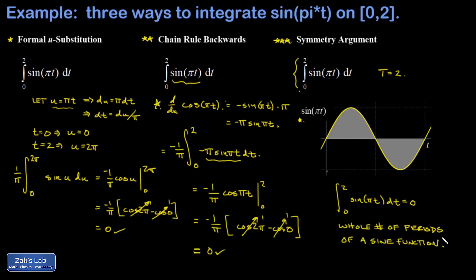So I can argue that the integral from zero to two of sine pi t dt vanishes because I'm integrating on a whole number of periods of a sine function. Now of course, it's critical that the midline of this sine function should be the t axis in order for this to work.